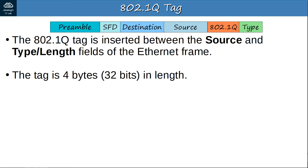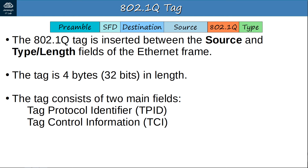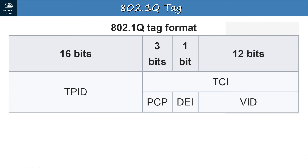The tag consists of two main fields: the Tag Protocol Identifier (TPID) and the Tag Control Information (TCI). The TCI itself consists of three subfields. Let's look at the dot1Q tag format. It can be divided into the TPID and TCI halves, and the TCI is further divided into three subfields: the PCP, DEI, and VID.